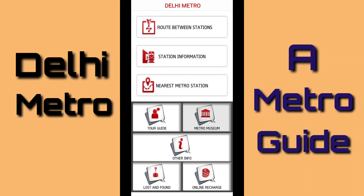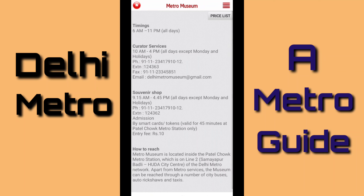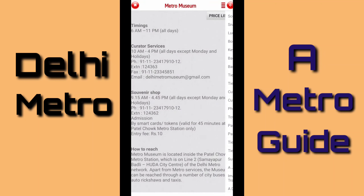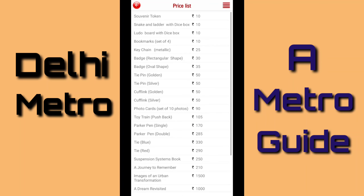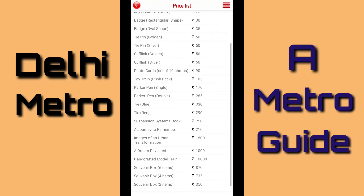The next option is metro museum. If I click on this, then it will give me details about the metro museum — that it opens at 6 AM and closes at 11 PM all days. Next, there are feeder services. Next, how can we reach the metro station — all the details have been given. If I click on the price list, then it will give me the list of all the prices.